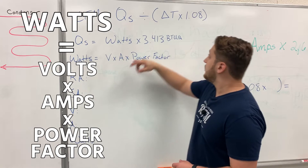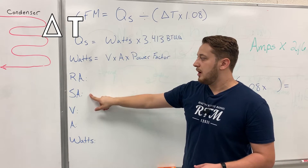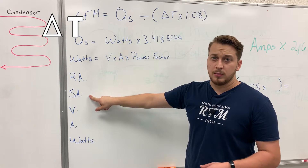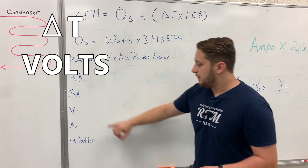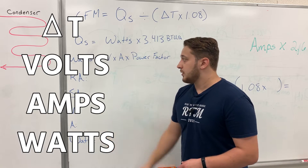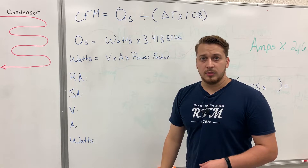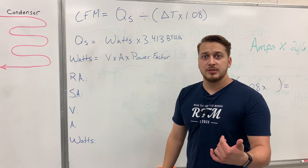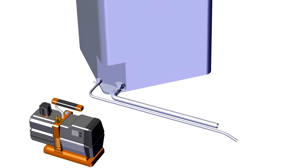We're going to get our delta T from the difference between our return and supply temperatures, and then take our volts and amps to calculate watts. We'll be working on a Goodman air handler — we're going to run the heat strips and do our calculation.